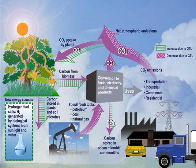Earth system science is the application of systems science to the Earth sciences. In particular, it considers interactions between the Earth's atmosphere, hydrosphere, cryosphere, geosphere, pedosphere, biosphere, and even the magnetosphere, as well as the impact of human societies on these components.